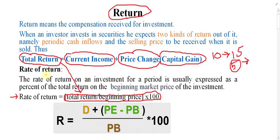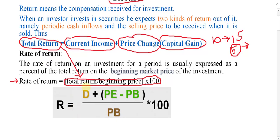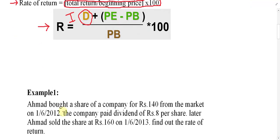Rate of return means return on the investment — how much is your return on the investment. Alternatively, you can use the second formula: rate of return equals D plus (Pe minus Pb), divided by Pb, multiplied by 100. D is dividend — if you purchased a debt security, instead of dividend you may have interest. Pe is price at the end (how much you sold it for), Pb is price at the beginning (how much you purchased it for). Divide by beginning price and multiply by 100 to get the rate of return.